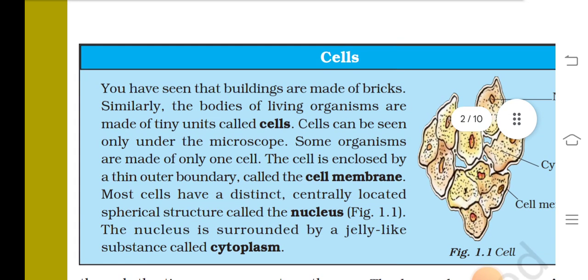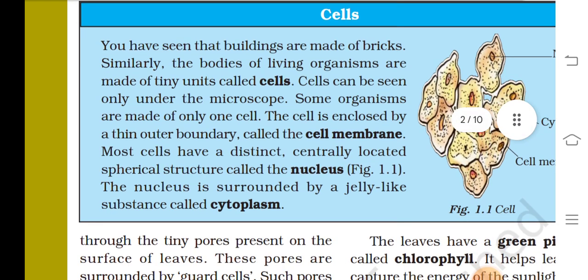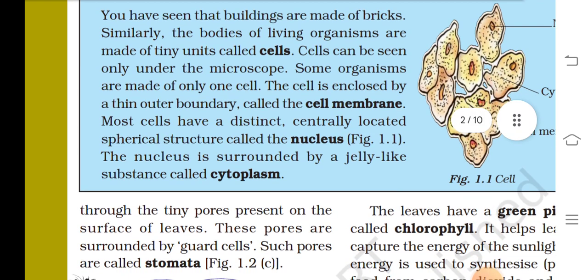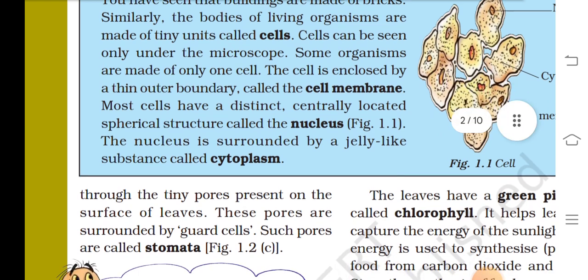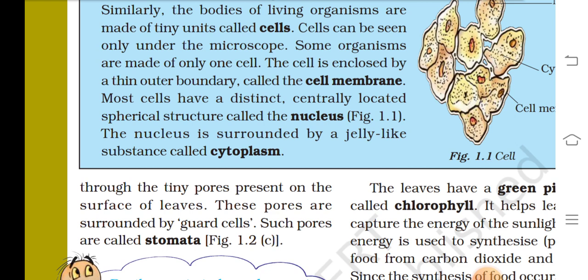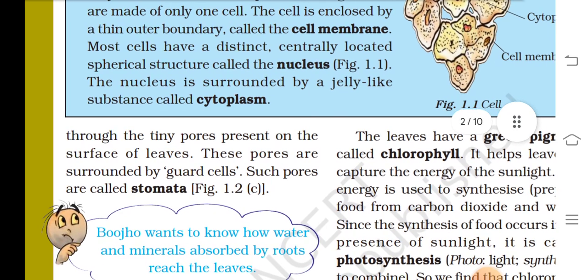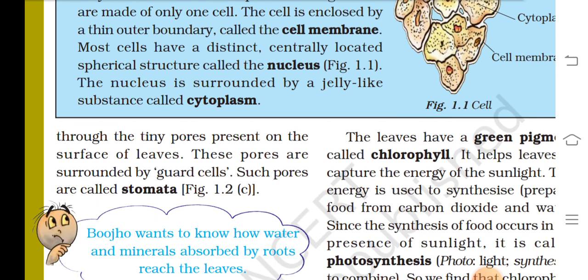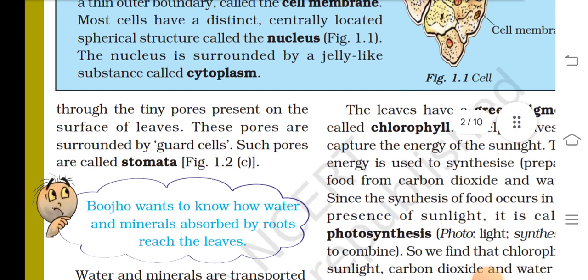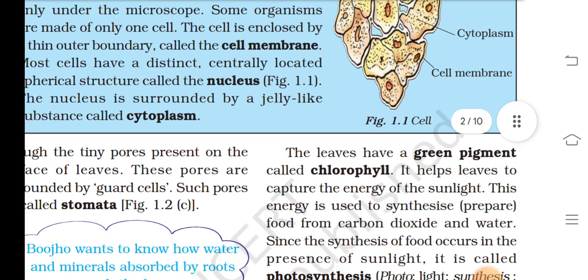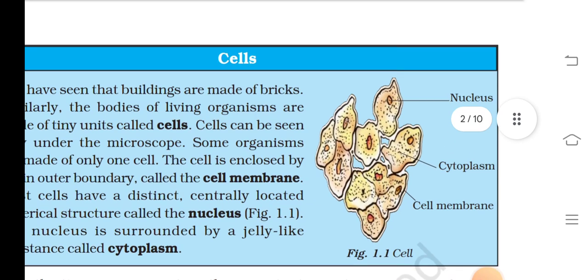Just as buildings are made of bricks, the bodies of living organisms are made of tiny units called cells. Cells can be seen only under the microscope. Some organisms are made of only one cell. Each cell is enclosed by a thin outer boundary called the cell membrane. Most cells have a centrally located spherical structure called the nucleus, which is surrounded by a jelly-like substance called cytoplasm.